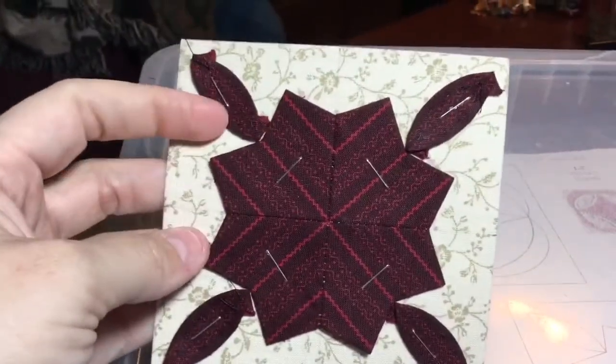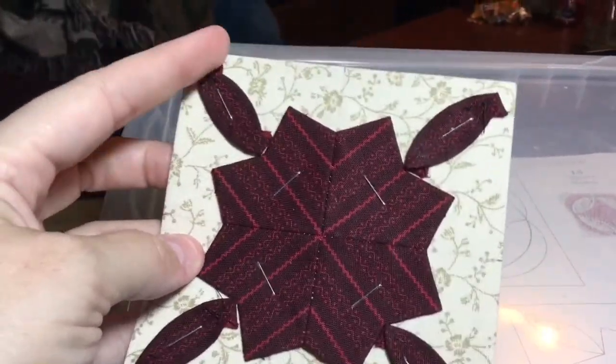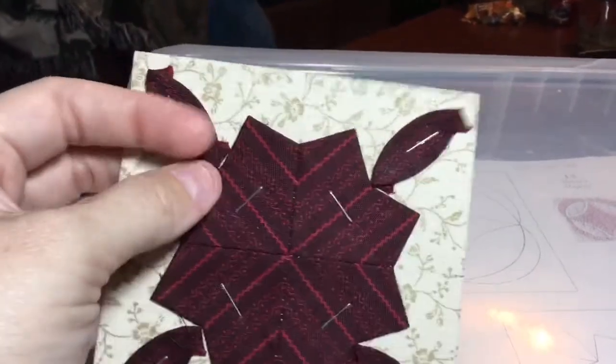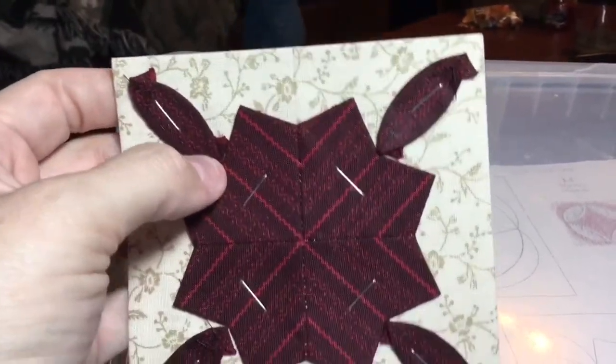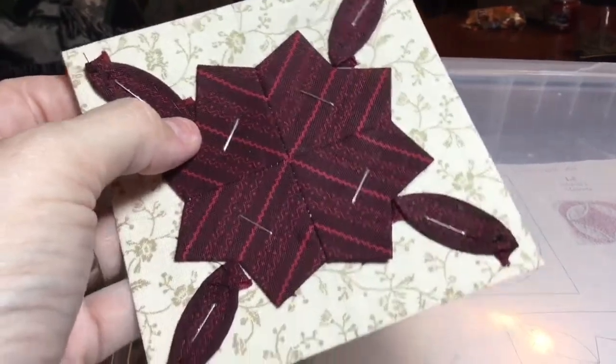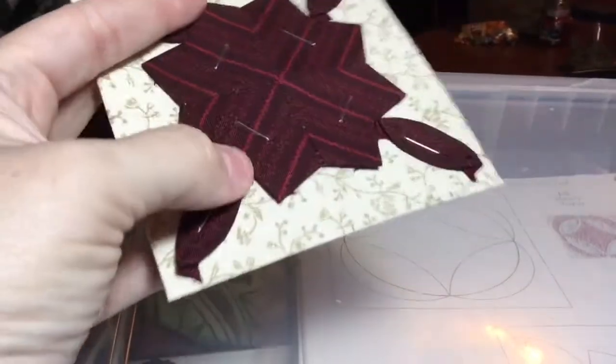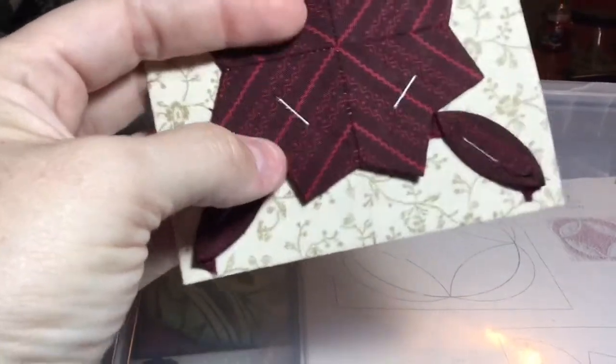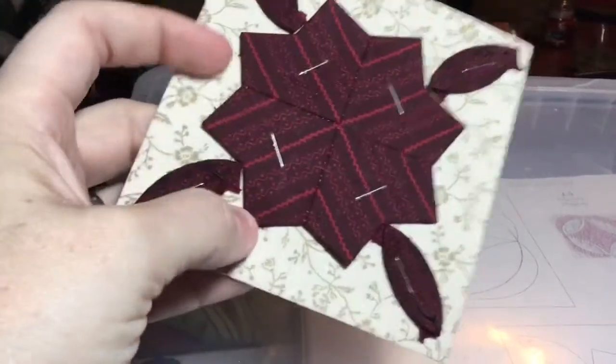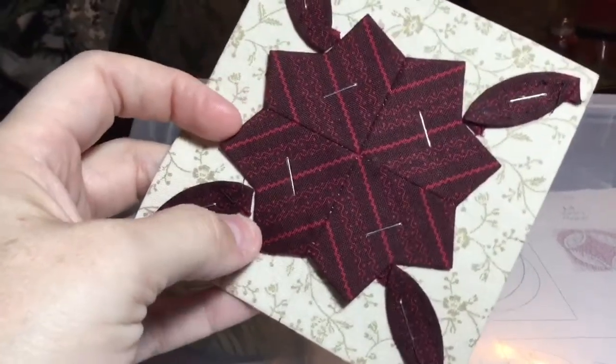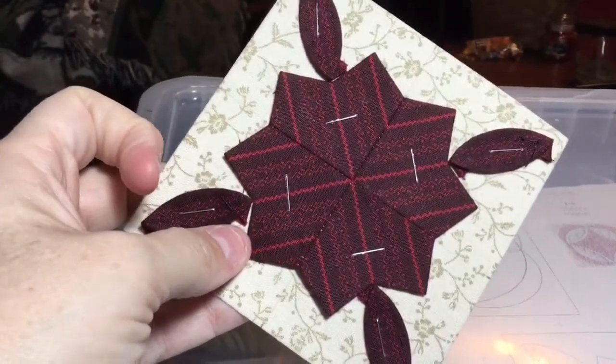So I've stapled on my little football units, and so now I'm going to be able to go all around each one of these in one shot so that I can maximize my threads. And so as I get to these points, I will tuck under my edges, but I'm glad that I don't have to tuck any of these edges on the center star section. So I will get going with my applique stitching.